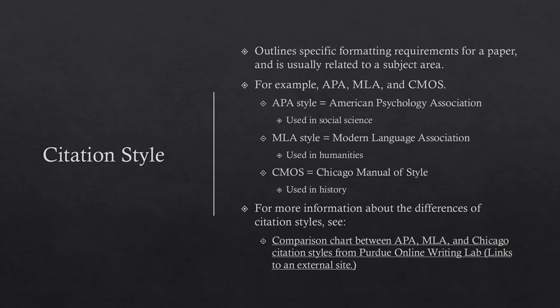For example, APA style is the American Psychology Association and is used in social science. MLA style is the Modern Language Association and is used in humanities. CMOS is the Chicago Manual of Style and it is used in history.